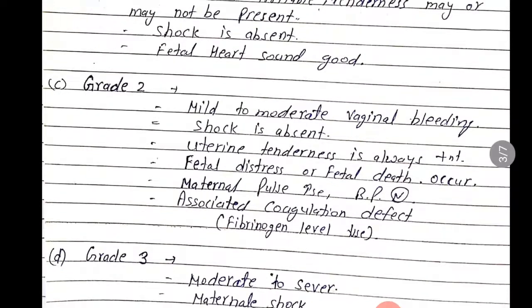Grade 2: mild to moderate vaginal bleeding. Shock is absent but uterine tenderness is always present. Fetal distress or fetal death may occur. Maternal pulse rate increases. There may be an associated coagulation defect — fibrinogen level decreases.